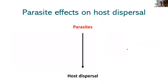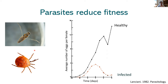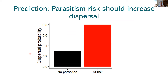We wanted to know how these mite parasites influence dispersal of the backswimmers. There are two different mechanisms by which this is possible. Parasites can influence the motivation of their host to disperse: by definition, parasites reduce host fitness, and so we expect that hosts will have an incentive to disperse when they sense they are at risk of gaining a parasitic infection. We predict that hosts perceiving themselves to be at risk of parasitic infection will have higher dispersal probability than hosts that do not perceive themselves to be at risk.